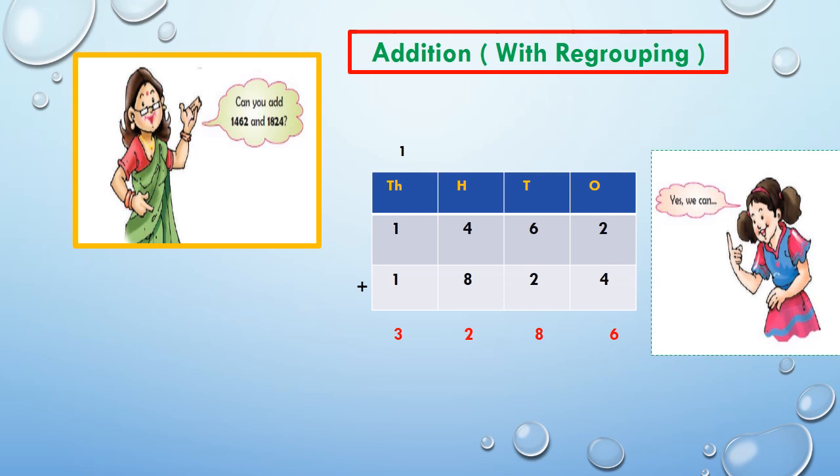Then, we add hundreds. 4 plus 8 is equal to 12. And 12 hundreds is equal to 1 thousand and 2 hundreds. Hence, write 2 in the hundreds place. Carry 1 to thousands place. Therefore, the sum of 1,462 and 1,824 is equal to 3,286.